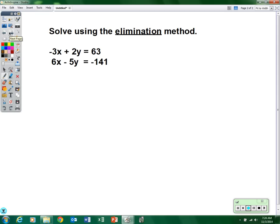Solve using the elimination method. So in this case we want to eliminate one of the variables. We've got a negative 3x and a 6x. We've got a plus 2y and a minus 5y. So we want one of them to disappear. Well, looking at it and thinking about what numbers they have in common, I think I want to get rid of the x.